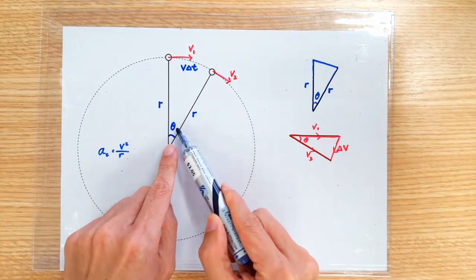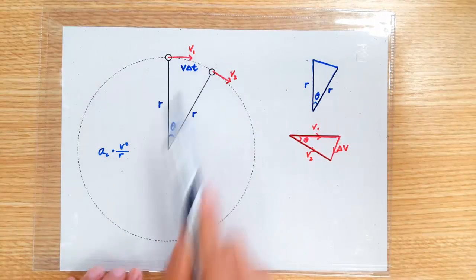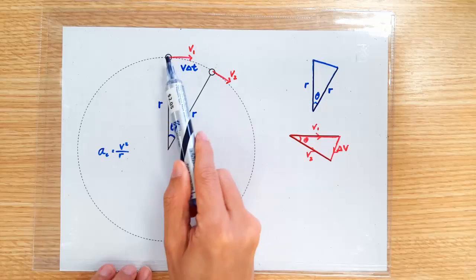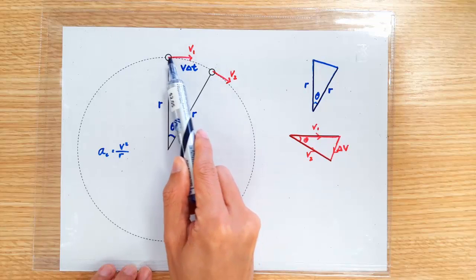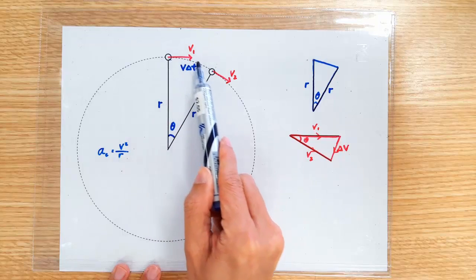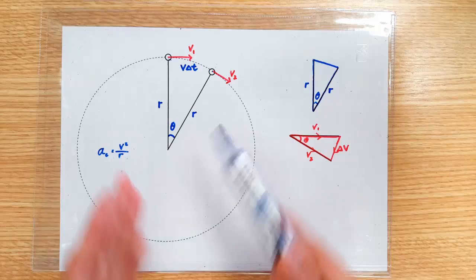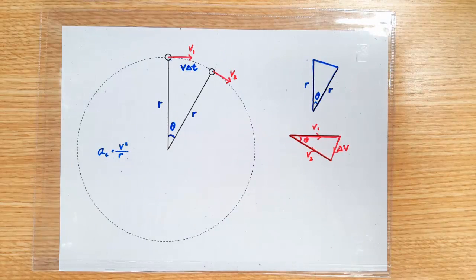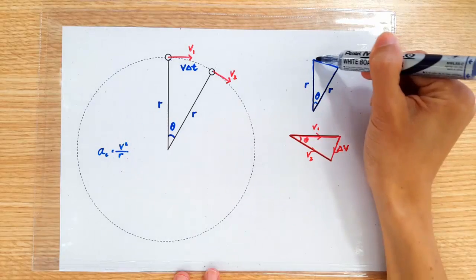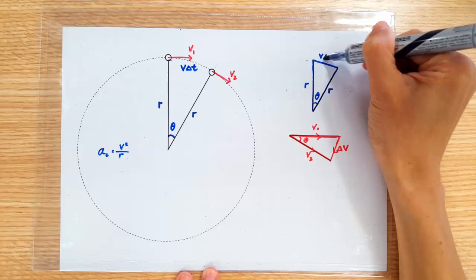If theta is very small, then the arc length is practically the same length as the line joining these two positions. Get it? The curvy arc length and the straight line joining these two points are practically the same if theta is small enough. So, the third side of the triangle here is basically equal to the arc length, which is v delta t.